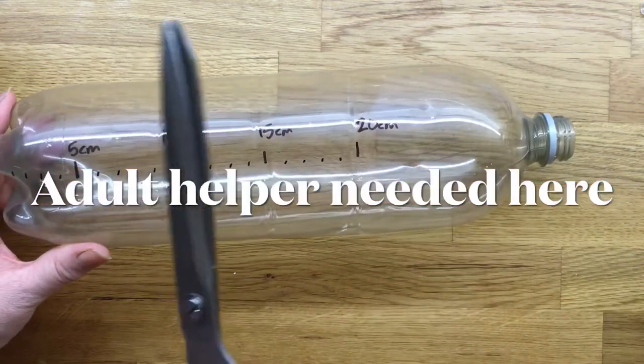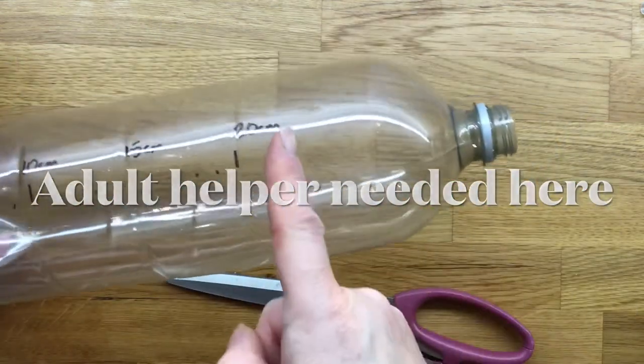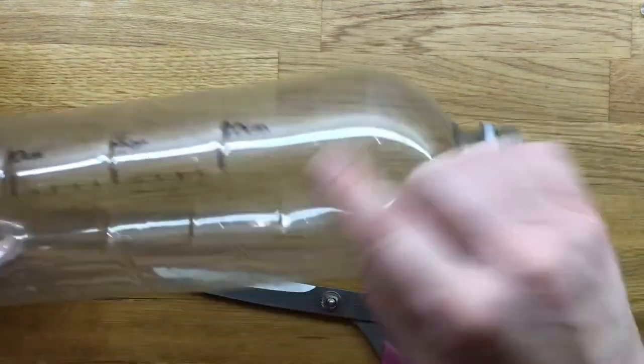Next you'll need your adult helper as we're going to cut the top off of the bottle around the 20 centimetre mark.